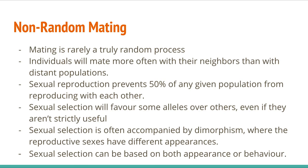Even in species that are supposedly monogamous — and we know from humans that monogamy is not always something we're great at, and many species that Victorian scientists thought were monogamous, especially birds, are not — even in species that mate for life and stick with one reproductive partner, there are still individuals who don't get to reproduce. Those individuals got sexually selected against, possibly. And that means the individuals who do have a mate get to reproduce and contribute their genetic material to the next generation.